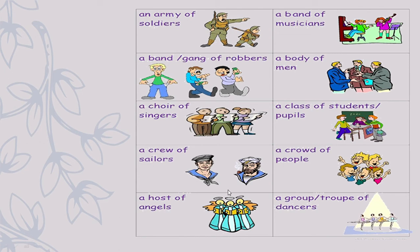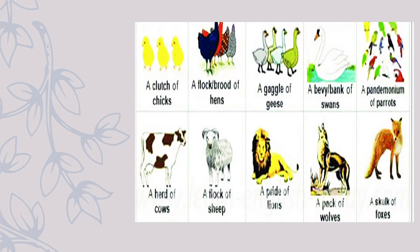An army of soldiers, a band or gang of robbers, a choir of singers, a crew of sailors, a host of angels, a group of dancers, a crowd of people, a class of students, a body of men, a band of musicians. The collective nouns are: army, band, gang, choir, crew, host, group, body, class, and crowd.